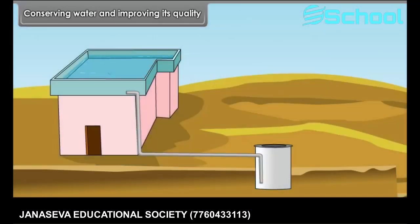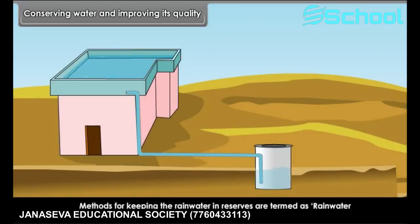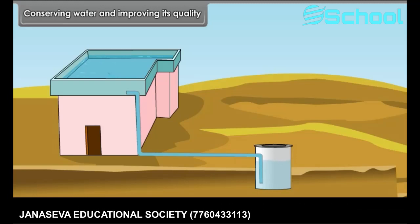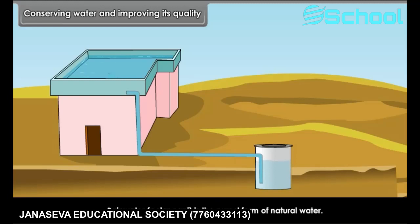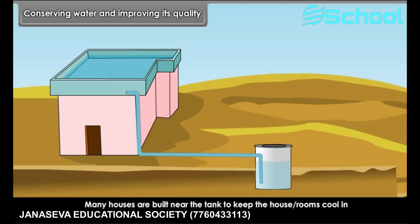Methods to conserve water. Rainwater harvesting — methods for keeping rainwater in reserves are termed as rainwater harvesting. Rainwater can be stored in a tank for 3 to 5 years, making it a regular source of drinking water. Rainwater, called polar pani, is the purest form of natural water and is often used to cure ailments of sick people. Many houses are built near the tank to keep rooms cool in summer.